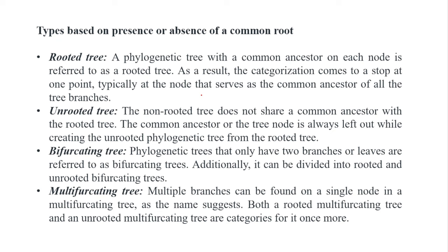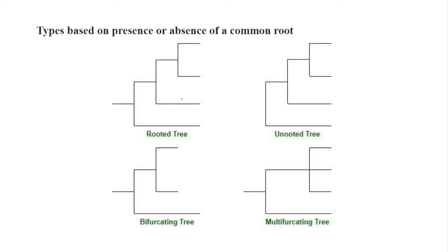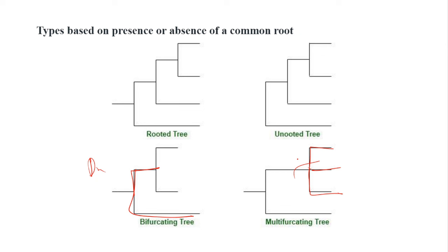Based on the presence and absence of a common root, phylogenetic trees are categorized as: rooted — where we find a previously pre-existing common ancestor; unrooted — where we cannot find any common ancestor; bifurcating — where two contrasting branches exist; and multifurcating — where multiple contrasting branches with different DNA or protein patterns exist. This is a rooted tree emerging from a common ancestor, this is unrooted with no common ancestor, this is bifurcating dividing into two groups, and this is multifurcating with multiple branches.